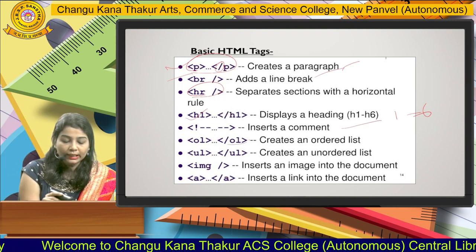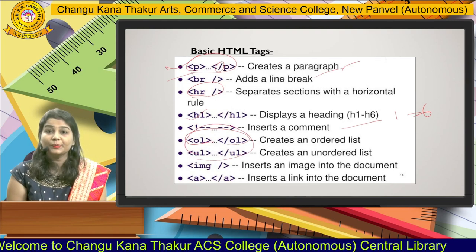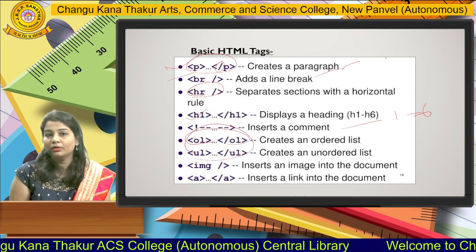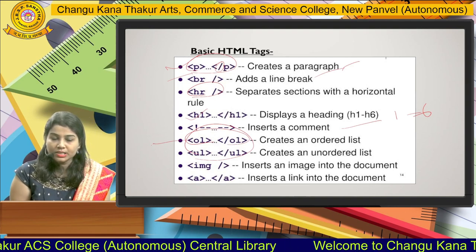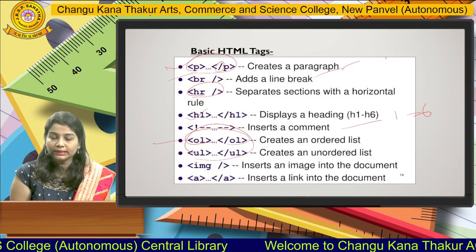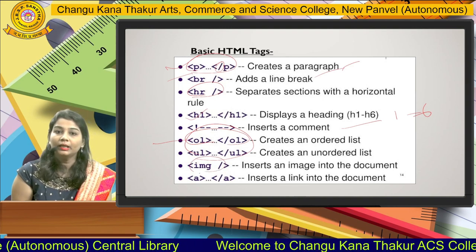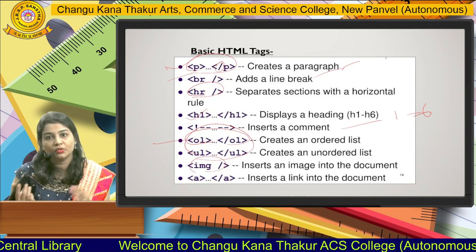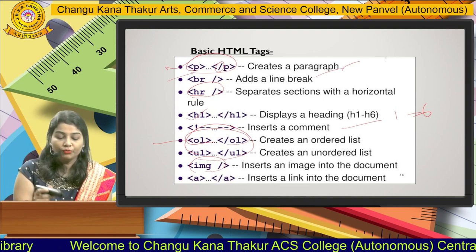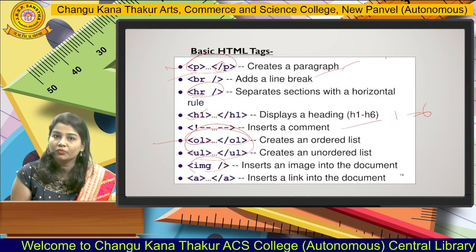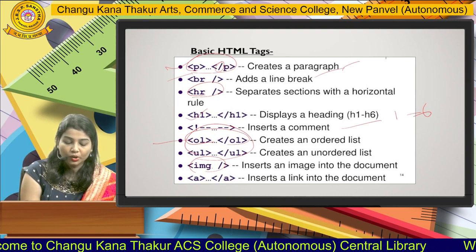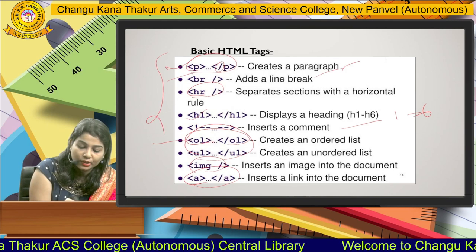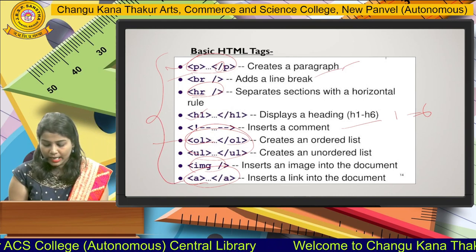Next are the OL tag and UL tag. If you want to display list-type data on the web page, you use a list tag. OL stands for ordered list and UL stands for unordered list. Next is the image tag — since a web page is a combination of videos, images, and links, if you want to display an image you use the image tag. And the last one is the A tag — the anchor tag — used to display a link.